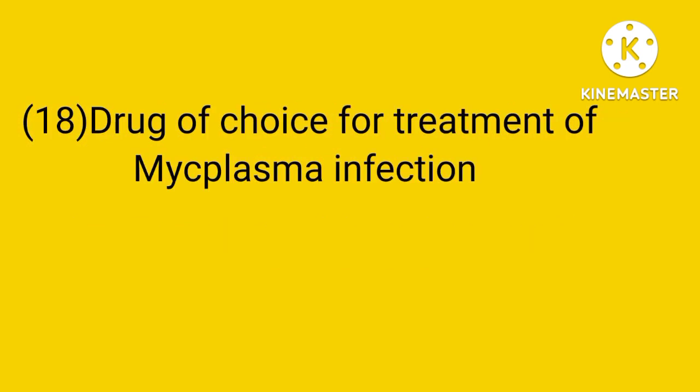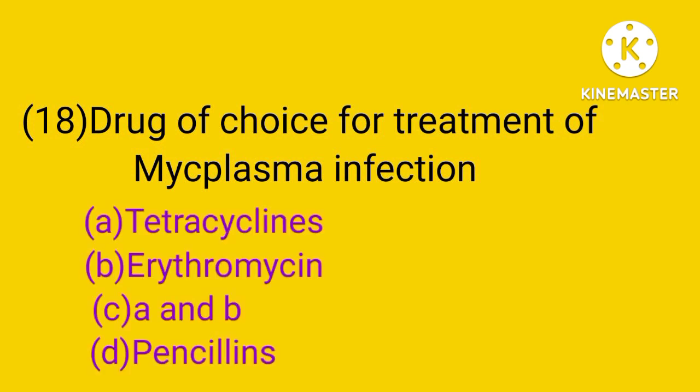Question number 18. Drug of choice for treatment of Mycoplasma infection is: tetracycline, erythromycin, A and B, or penicillins. The answer is C. Both tetracycline and erythromycin are the drug of choice for treatment of Mycoplasma infection.